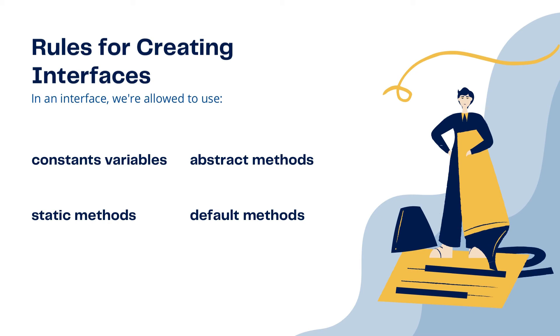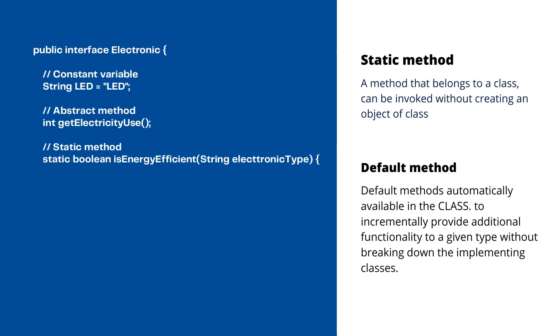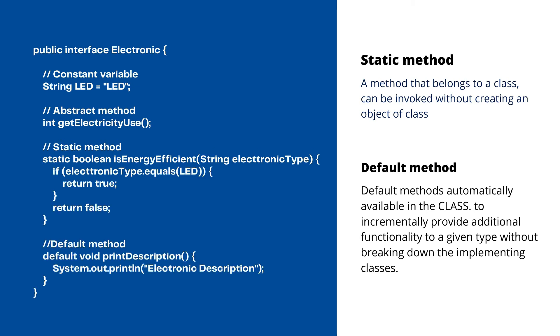Now this slide is basically talking about how we can write, how we can create interface. As you can see here I'm defining here constant variable, abstract method, static method and default method. If you don't know what is static method, then let me define it for you. Static method - that belongs to a class, can be invoked without creating an object of a class. Now if you don't know what is object, what is a class, then I will highly recommend you to please watch my first video where I have clearly covered what exactly an object and class is.